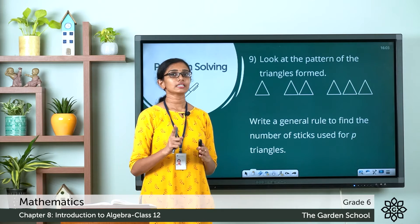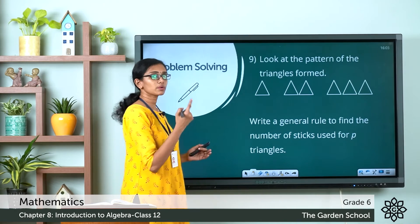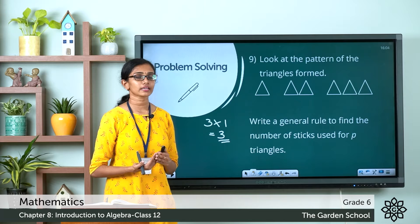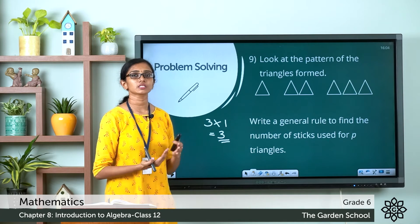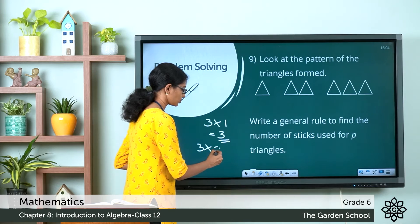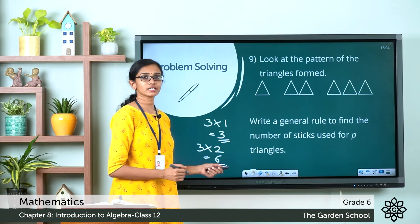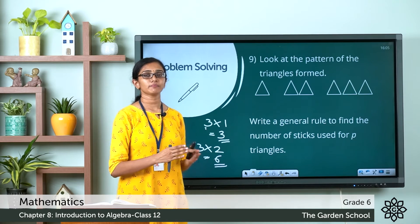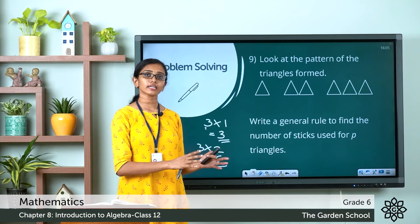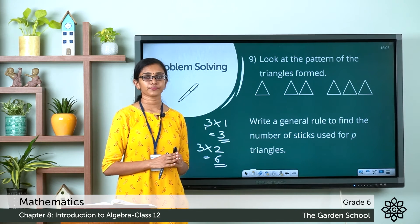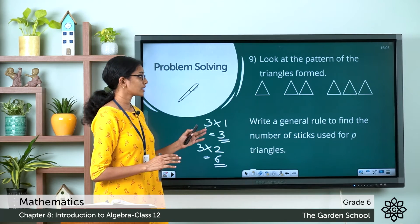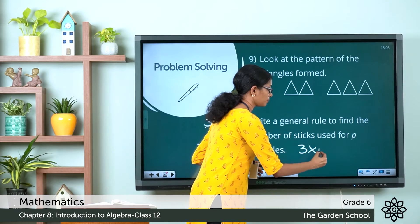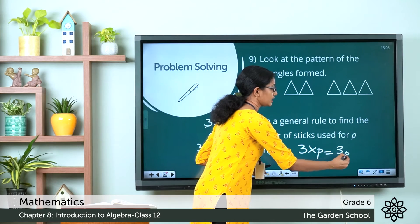For example, for 1 triangle: 3 into 1 equals 3 sticks. For 2 triangles: 3 into 2 equals 6 sticks. So the numeral 3 is multiplied by the number of triangles to get the number of sticks. In general, the number of sticks used to form P triangles equals 3 into P, which is written as 3P.